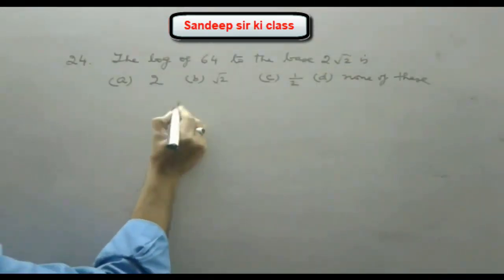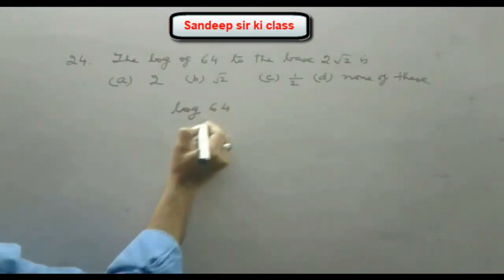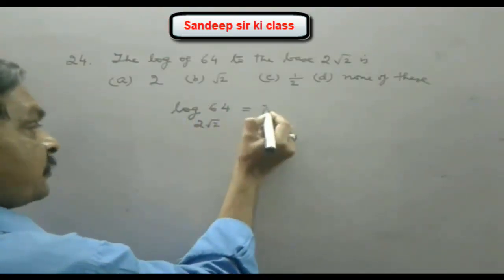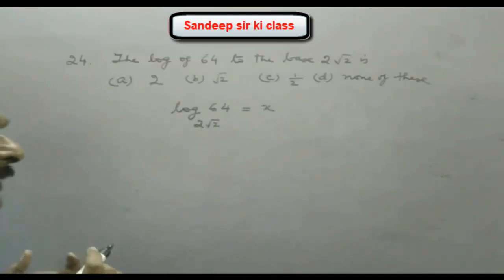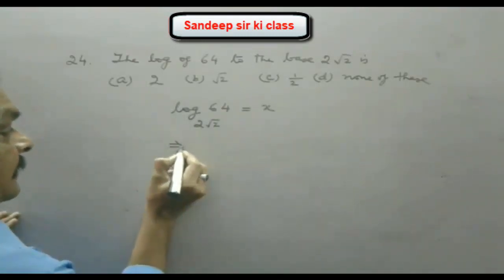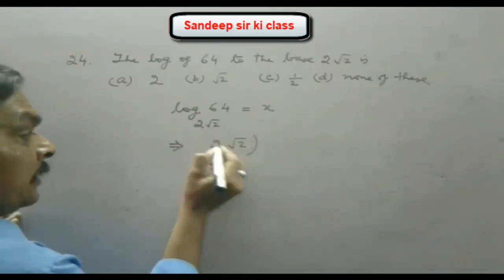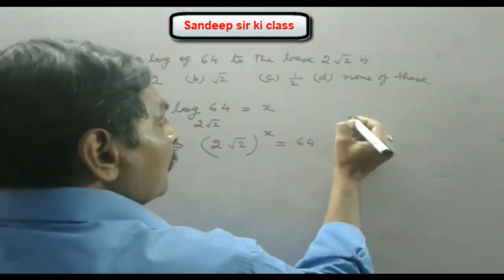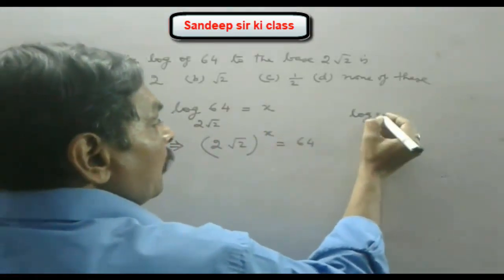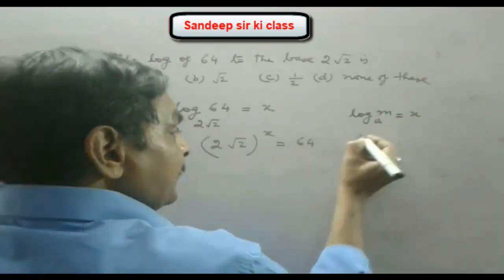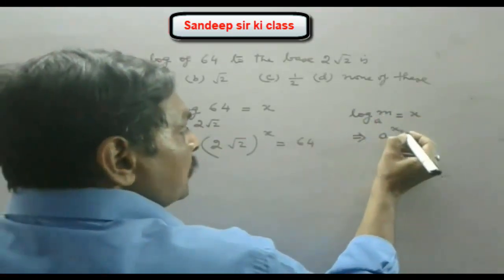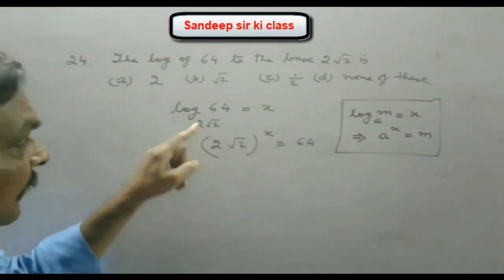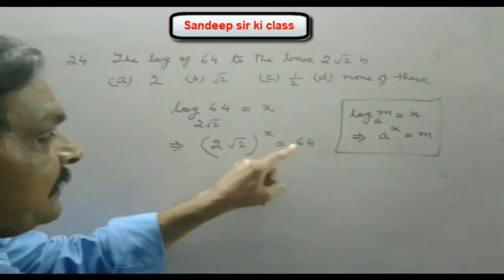We have to find log 64 to the base 2√2. We suppose this value is x. From the definition of log, if log of m to the base a is x, then a raised to the power x equals m. Using this definition, we write 2√2 to the power x is equal to 64.